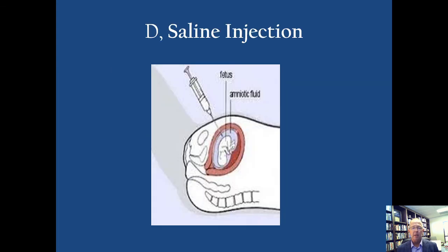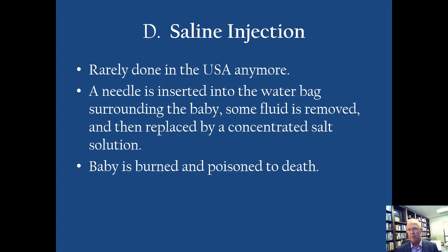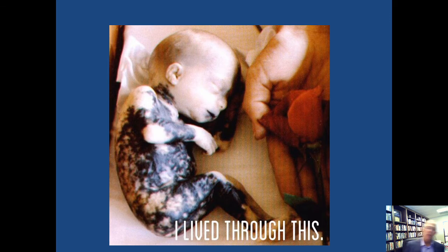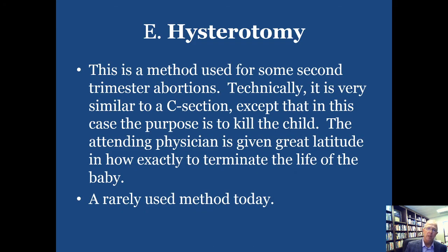The mother then gives birth within 24 hours to a dead baby. This is Gianna Jessen — she actually survived a saline injection abortion. Her mom was seven and a half months pregnant, and Gianna is alive today. I know this is hard, but this is what a baby looks like after a saline injection abortion — a baby that's been burned to death via saline injection. Hysterotomy is another very rare method used today for abortion — used for some second or third trimester abortions. It's basically like a C-section, but the purpose is to kill the baby. It appears to occur infrequently.